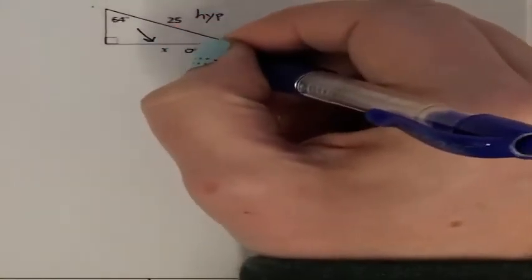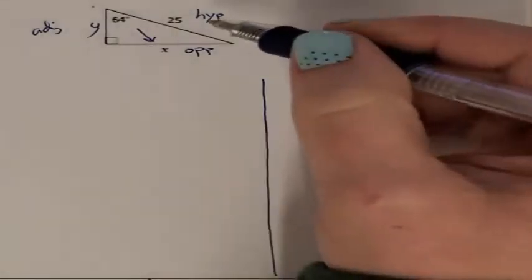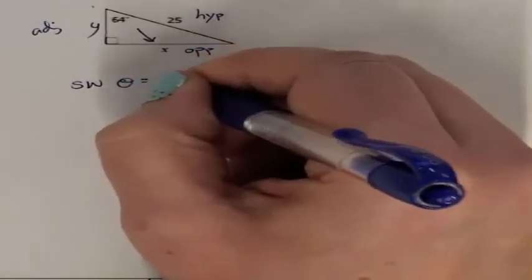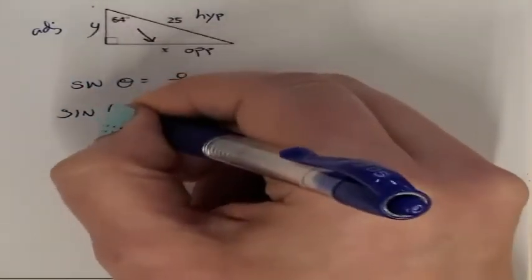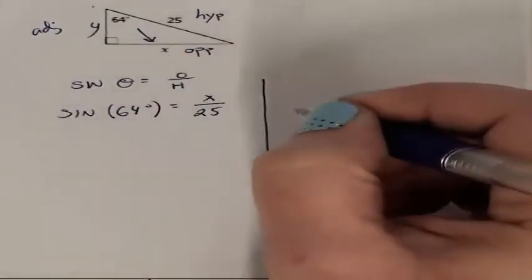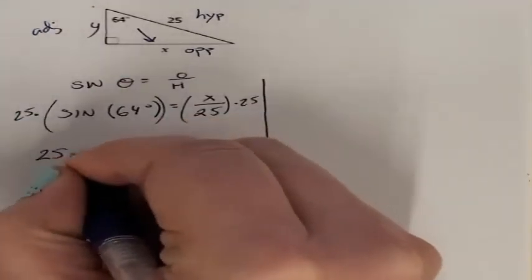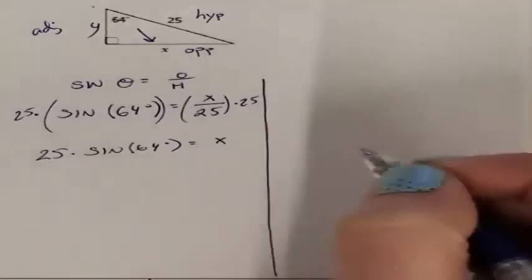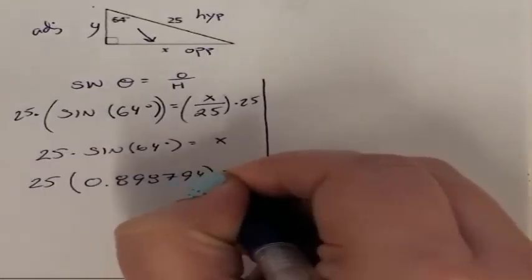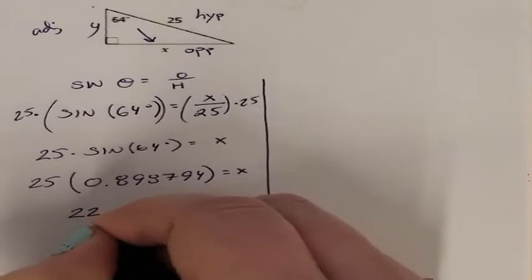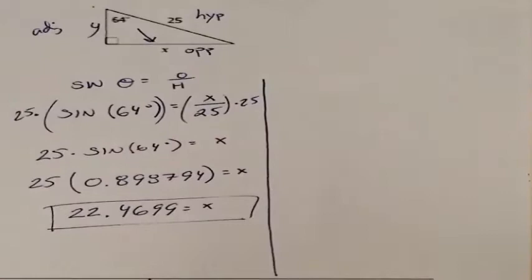We're asked to find the missing sides. I know my hypotenuse is 25. This is going to be my opposite, and my adjacent is the missing Y value. Two missing sides means two problems. I have the hypotenuse and I want my X, my opposite — hypotenuse and opposite is sine. Sine of theta is opposite over hypotenuse. Sine of 64 degrees equals X over 25. Multiplying both sides by 25, I get 25 times sine of 64 degrees equals X. Sine of 64 degrees is 0.898794, and multiplied by 25 gives me 22.4699 — that is my missing X value, my opposite.